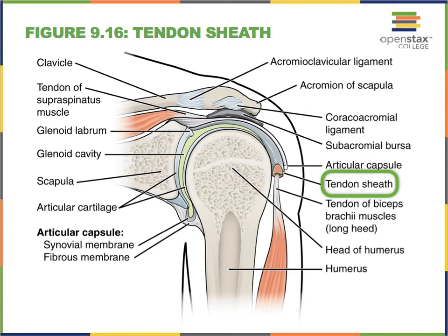Tendon sheaths do something very similar—they sit between hard and softer spots—but they wrap themselves around a tendon. For instance, here we're looking at a shoulder joint. This is the head of the humerus. Here we see the scapula with some muscles coming in, and here's a clavicle, our collar bone.